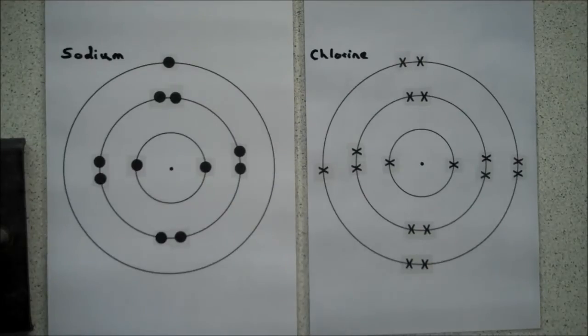In this video, we're looking at how a metal reacts with a non-metal to form an ionic compound. The example we're taking is sodium reacting with chlorine.